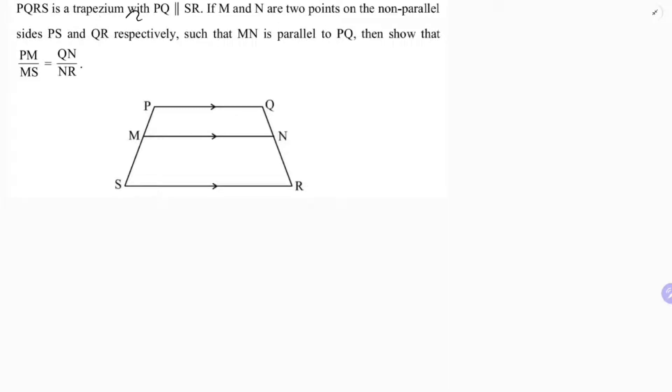PQRS is a trapezium with PQ parallel to SR. M and N are two points on the non-parallel sides PS and QR respectively, such that MN is parallel to SR. These three lines are parallel. Then show that PM/MS equals QN/NR.